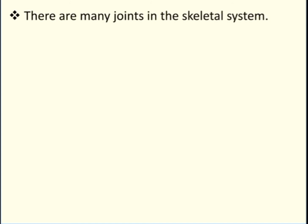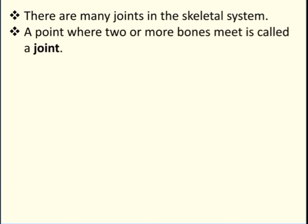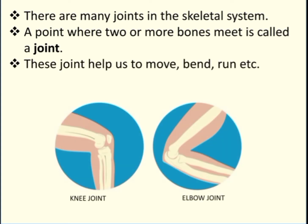Now let us discuss joints. There are many joints in the skeletal system. A point where two or more bones meet is called a joint. These joints help us to move, bend, run, and do so many activities. Here you can see the knee joint and elbow joint. Our body moves because of these joints — only the part where we have joints will move.